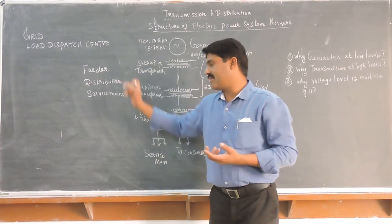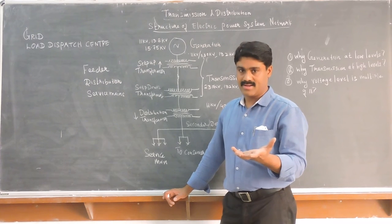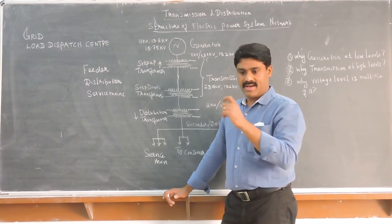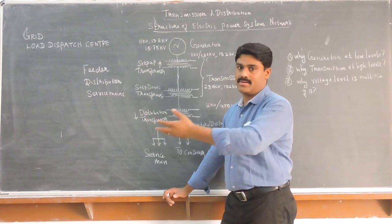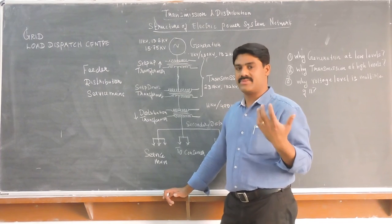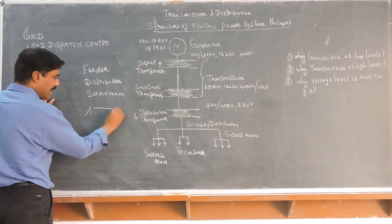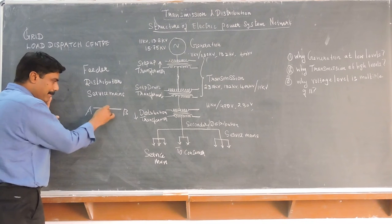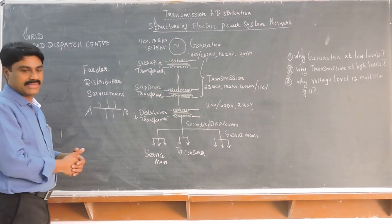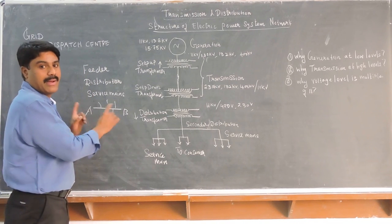Coming to the feeder — a feeder is a simple conductor which connects point A to point B, where A may be a generating station or a substation. It connects a point A to B, wherein no tappings are taken for other purposes. So a feeder is a line where no tappings are taken between point A and point B.